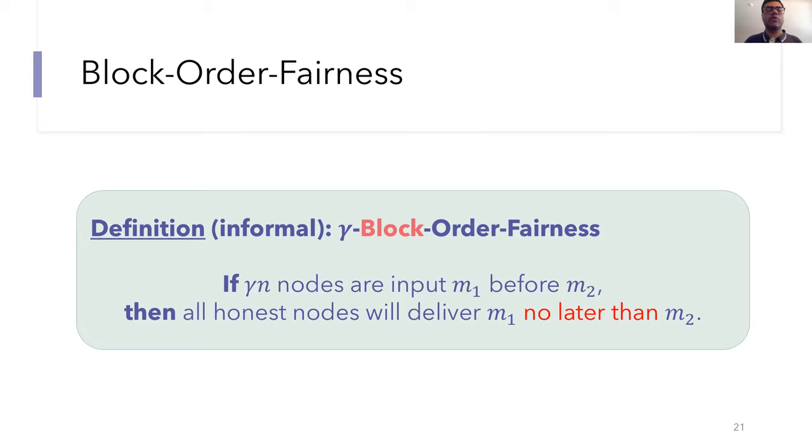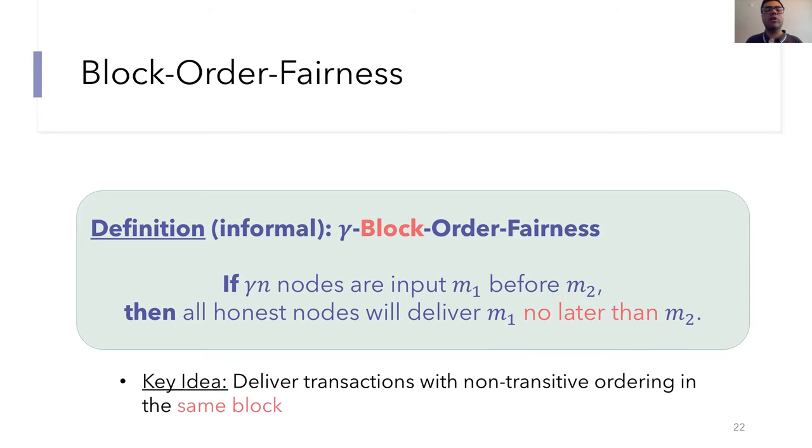So to weaken our definition, we considered several alternative ones in our paper, but here's the one we settled on. We call this block order fairness. We think this intuitively captures the same first in first out notion, but we can construct protocols to realize it. The key difference between this definition and the receive order fairness definition is that the protocol is now allowed to deliver M1 and M2 in the same block. So hence the aptly named block order fairness. M1 just can't be delivered in a later block.